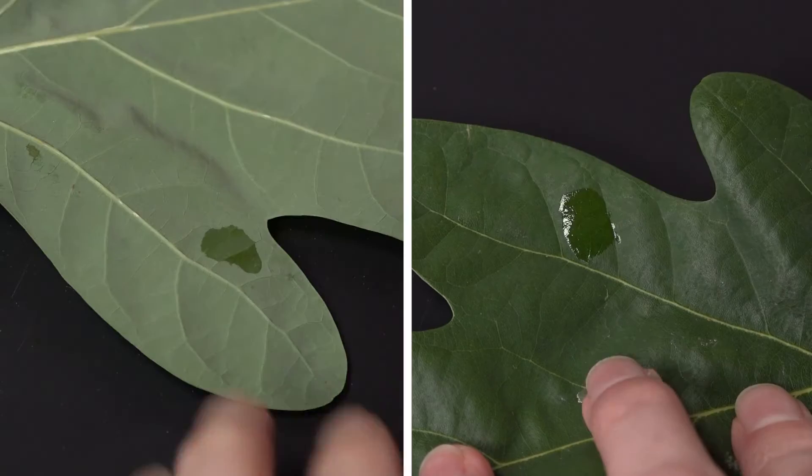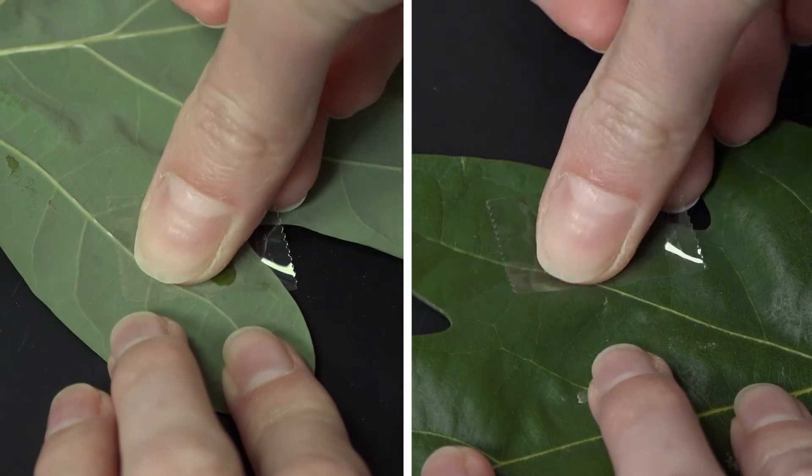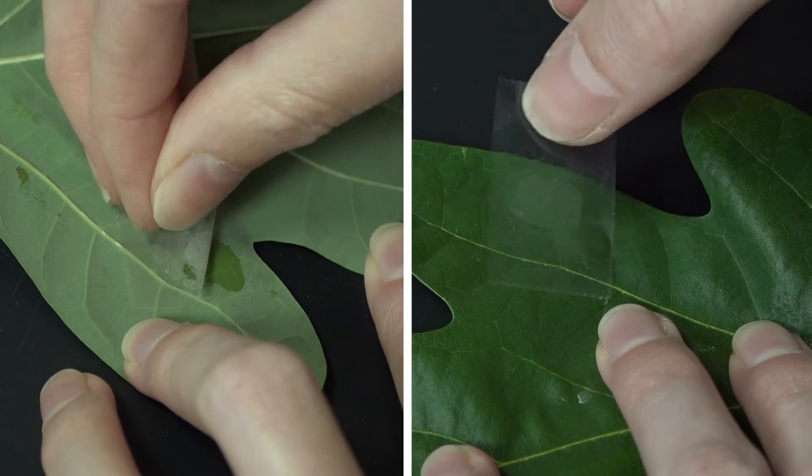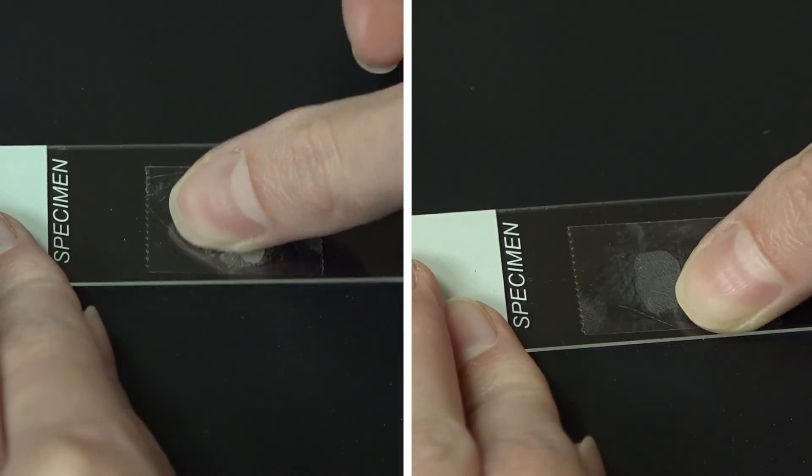Another useful metric to assess in a transpiration experiment is the density of stomata on the leaf surface. We don't have time to do that today, but we have another method video on LabExchange that demonstrates how to do a leaf peel for observing and counting stomata, so check that out if you're interested.